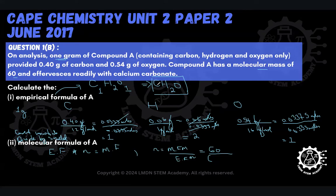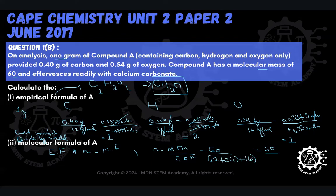The molecular formula mass given was 60, so we put 60 on top. We calculate the empirical formula mass by summing the relative atomic masses in the proportions present in the empirical formula: 12 for carbon, plus 2 times 1 for hydrogen, plus 16 for oxygen. That gives us 60 divided by 30, so our value of N is equal to 2.